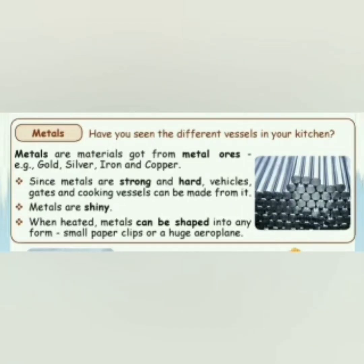Metals. We have seen different kinds of vessels in our kitchen. Where do we get these metals from? We get these metals from metal ores — for example, gold, silver, iron, and copper. As metals are very strong and hard, we can use them for different purposes like vehicles, gates, and cooking vessels.